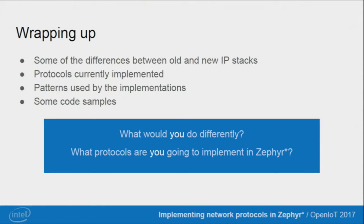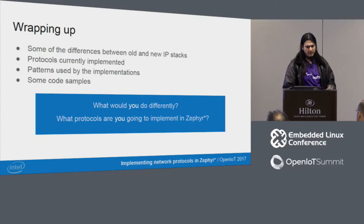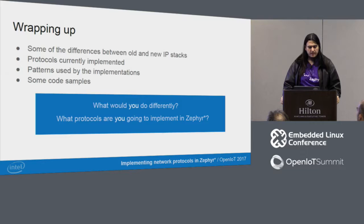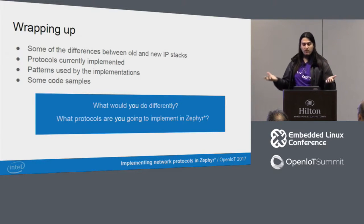Wrapping up: we saw some of the differences between the old and new IP stack, some of the protocols currently implemented, some of the patterns used by the implementations, and some code samples. I'd like to invite questions: what would you do differently, and what protocols would you like us to implement in Zephyr? I'm open for questions.